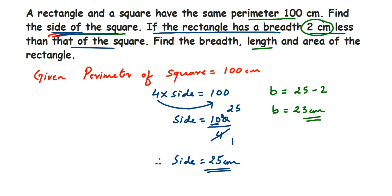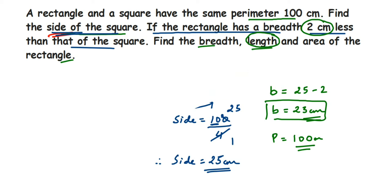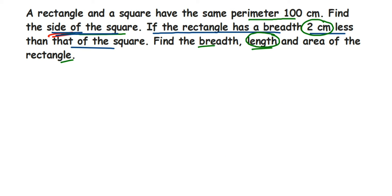We found the breadth of the rectangle. Now we have to find the length, and then the area — two more things. To do this, we go back to the perimeter. We have the breadth of the rectangle and we also know the perimeter of the rectangle is 100 centimeters. Using these two, we're going to find the length. So: breadth is equal to 23 centimeters.